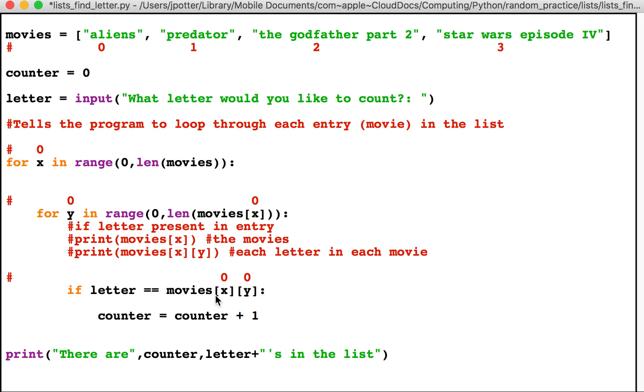And what this means is movies, which is our list, x which is the first entry in the list which is 'aliens', and y which is the first letter in the word 'aliens'. Okay, if it matches, it'll add one to the counter.